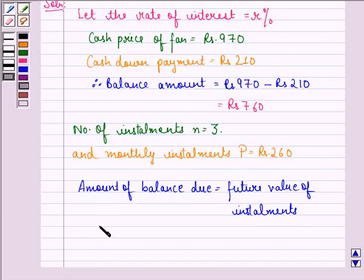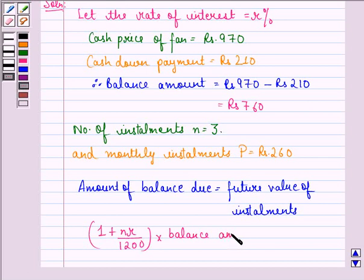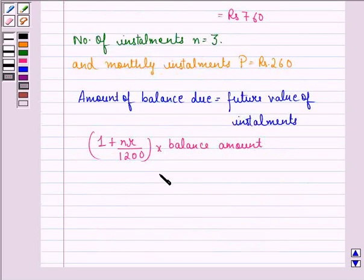That is, (1 + nR/1200) × balance amount = (1 + (n-1)R/2400) × n × P.